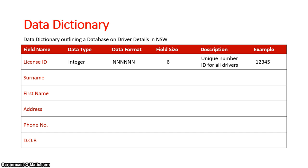Now we'll go down to the date of birth field. Basically the data type would be datetime, but I want to illustrate the date format. With the format characteristic in our data dictionaries, we outline how we want data to be written. This would be day-day, month-month...